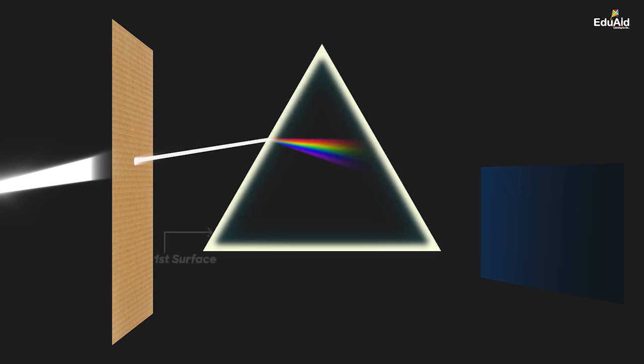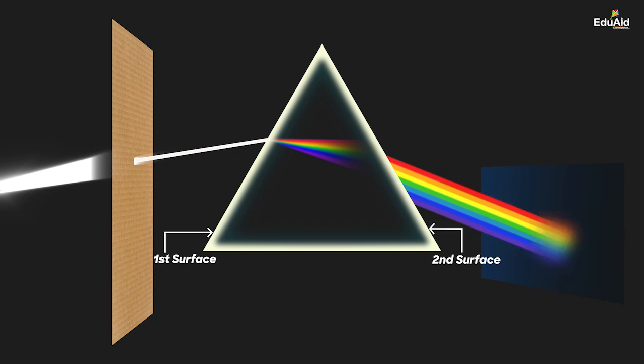The light will encounter the refracting surface of the prism, undergo refraction, then travel inside the prism to encounter the second refractive surface, undergo refraction again, and finally emerge and hit the screen placed on the other side of the prism. We have taken white light — so what will be the colours formed on the screen? Whether only white light, a patch of different colours including white light, or a patch of different colours excluding white light?